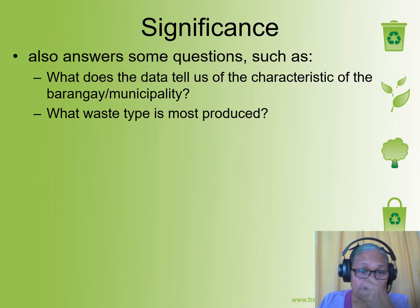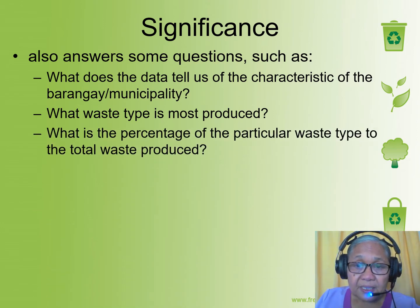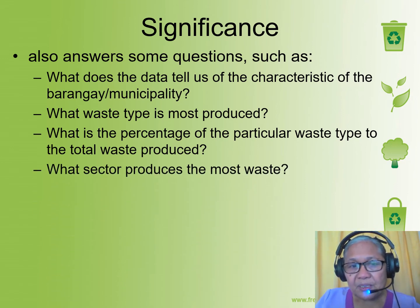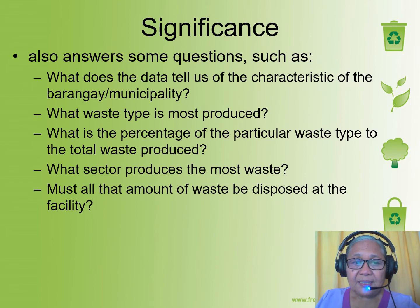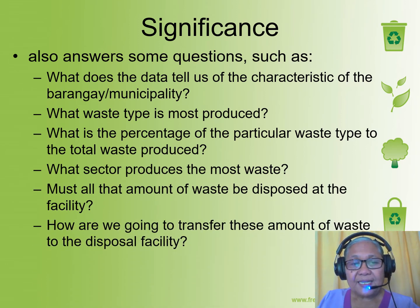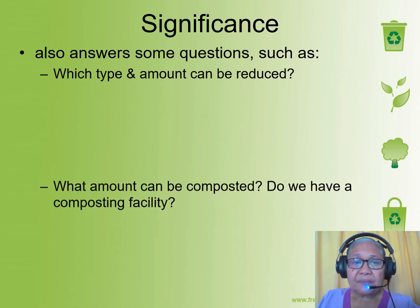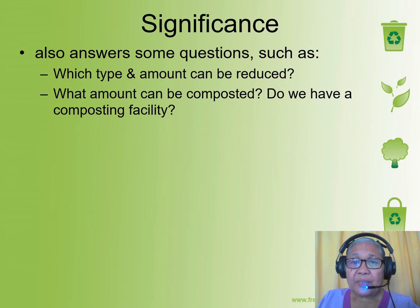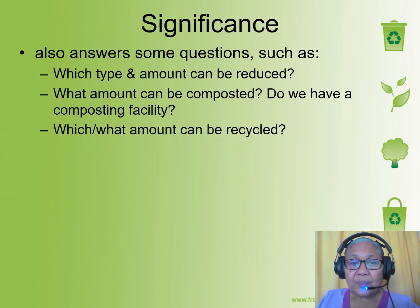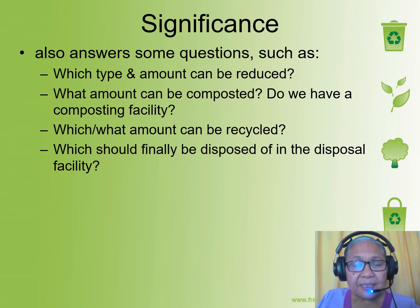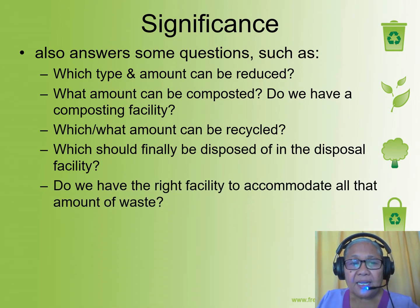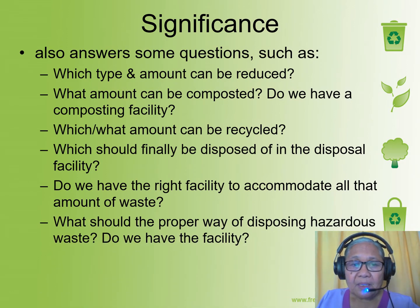Another question is: what waste type is most produced? What is the percentage of the particular waste type to the total waste produced? What sector produces the most waste? Must all the amount of waste be disposed of at the facility? How are we going to transfer this amount of waste to the disposal facility? Which type or amount can be reduced? What amount can be composted? Do we have a composting facility? Which or what amount can be recycled? Which should finally be disposed of in the disposal facility? Do we have the right facility to accommodate all the amount of waste? And what should be the proper way of disposing hazardous waste — do we have the facility?